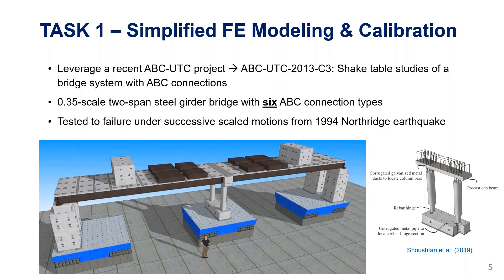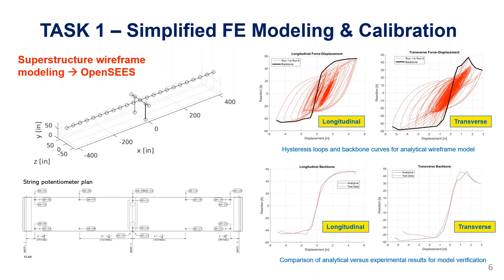The bridge was tested to failure, providing valuable experimental data. Dr. Selavi and her student practiced different model types, and I'm showing the most simplified version they decided to proceed with — a superstructure wireframe in OpenSees with carefully calibrated material models and boundary conditions. The analytical backbone curves compare well to the experimental results. The model captured force capacity and also accurately captured displacement capacity within five to ten percent difference, giving confidence to scale up.